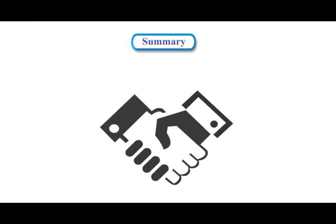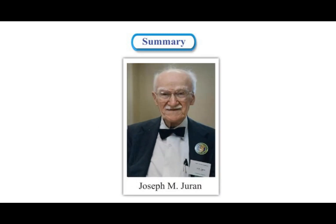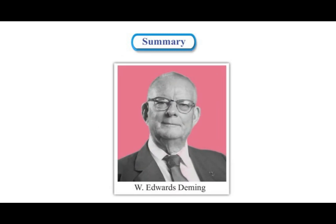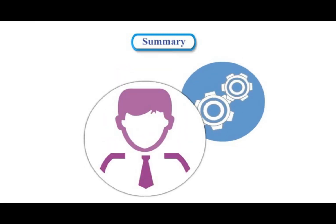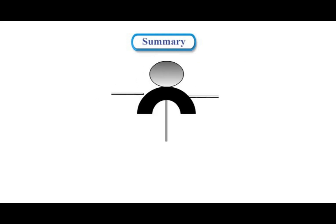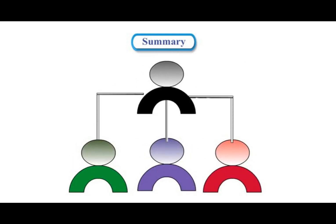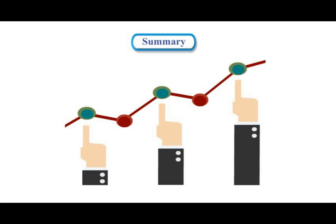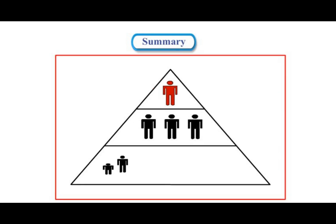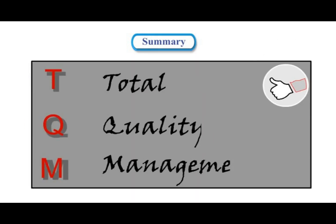The Japanese welcomed the input of Americans Joseph M. Juran and W. Edwards Deming and rather than concentrating on inspection, focused on improving all organizational processes through the people who used them. This approach emphasized not only statistics but approaches that embrace the entire organization and is known as total quality management.